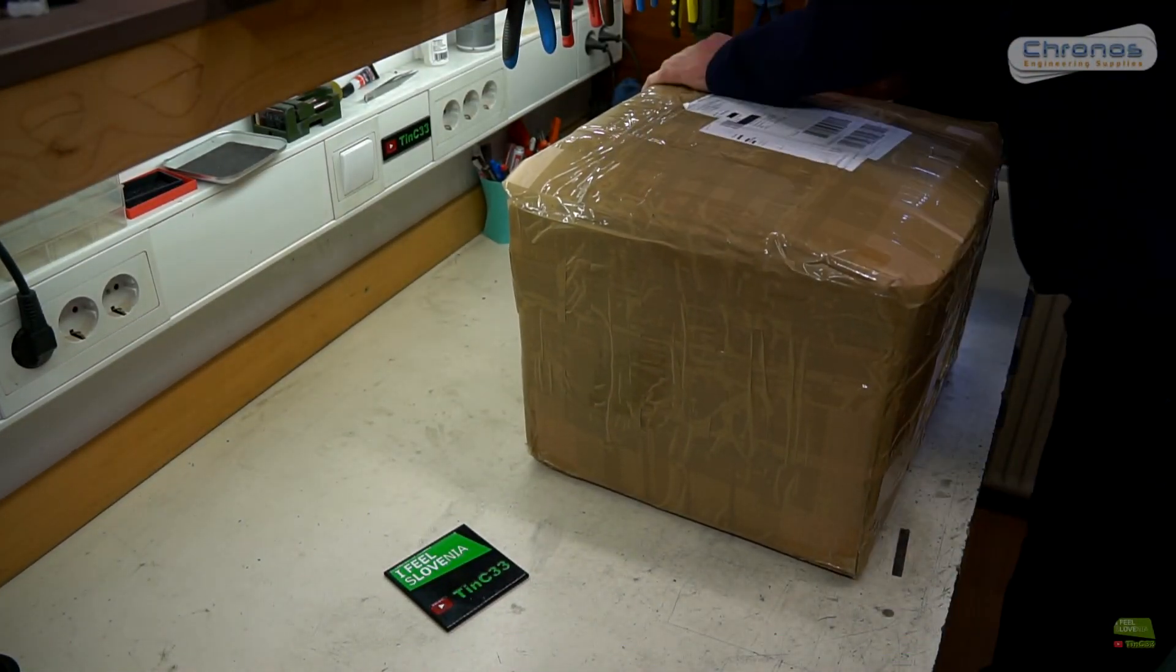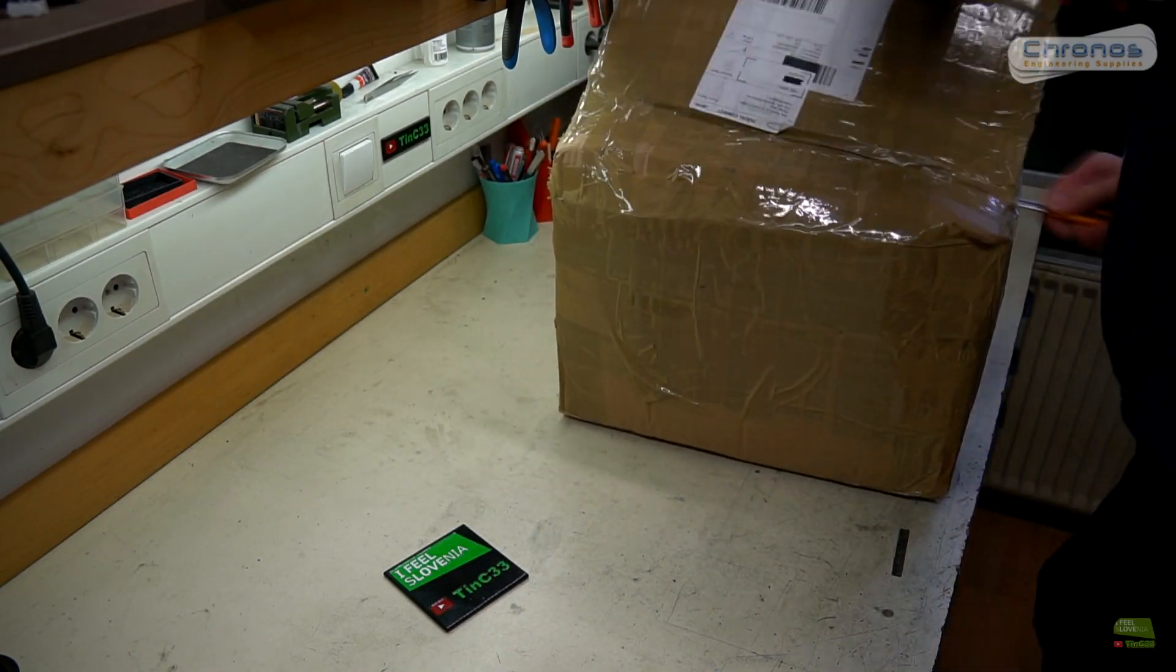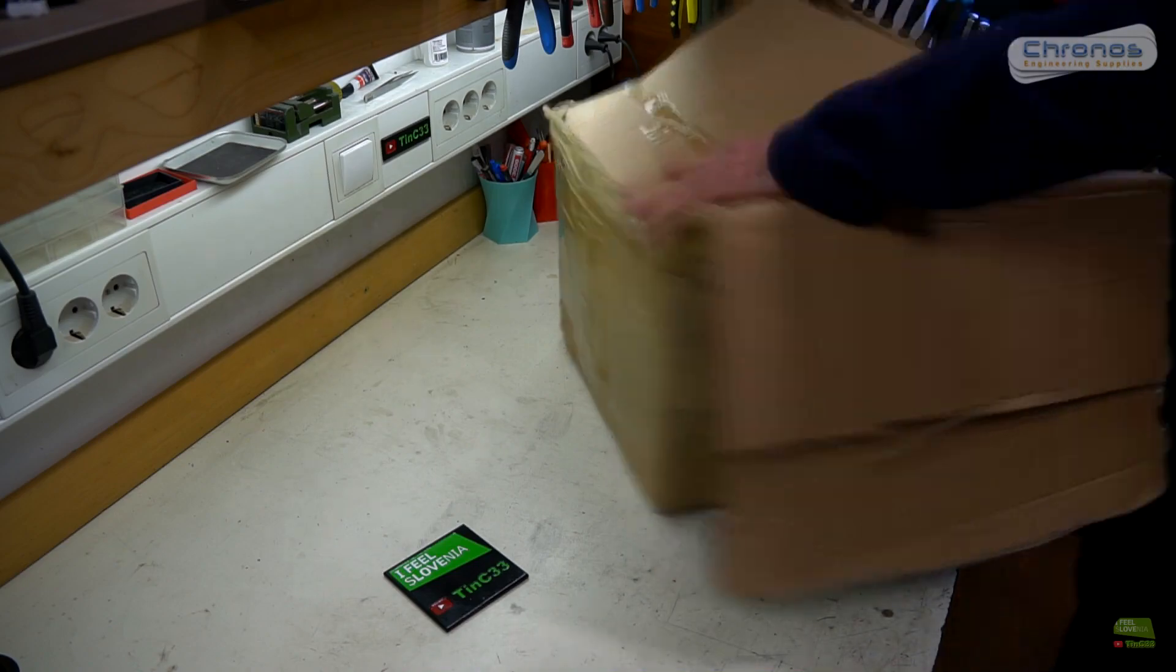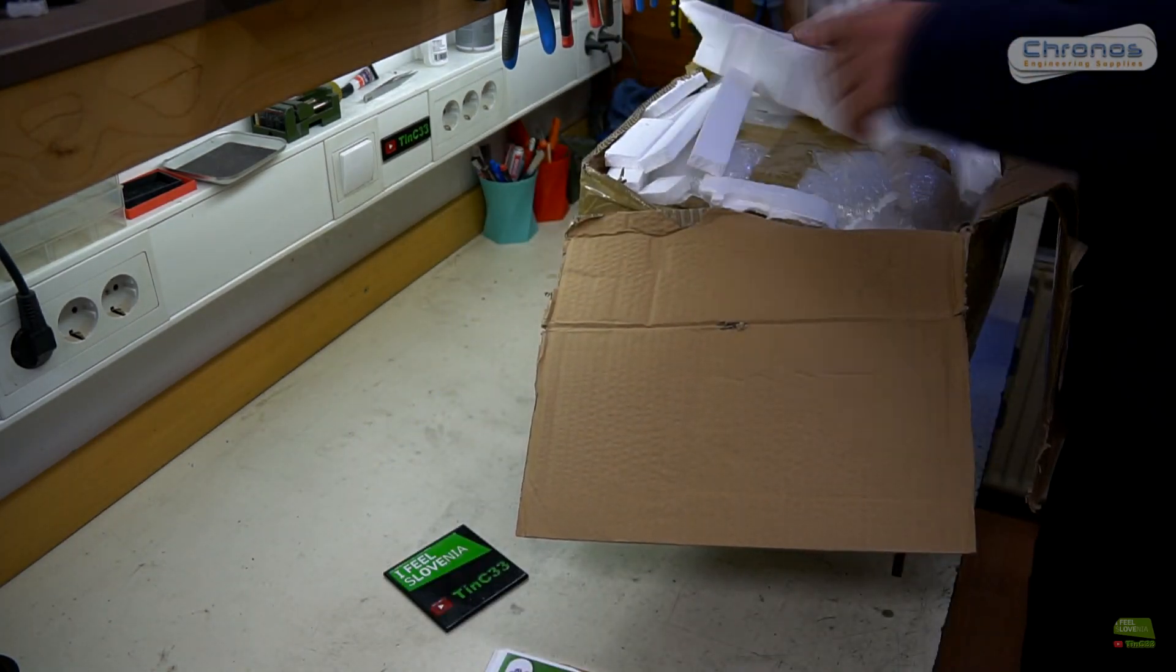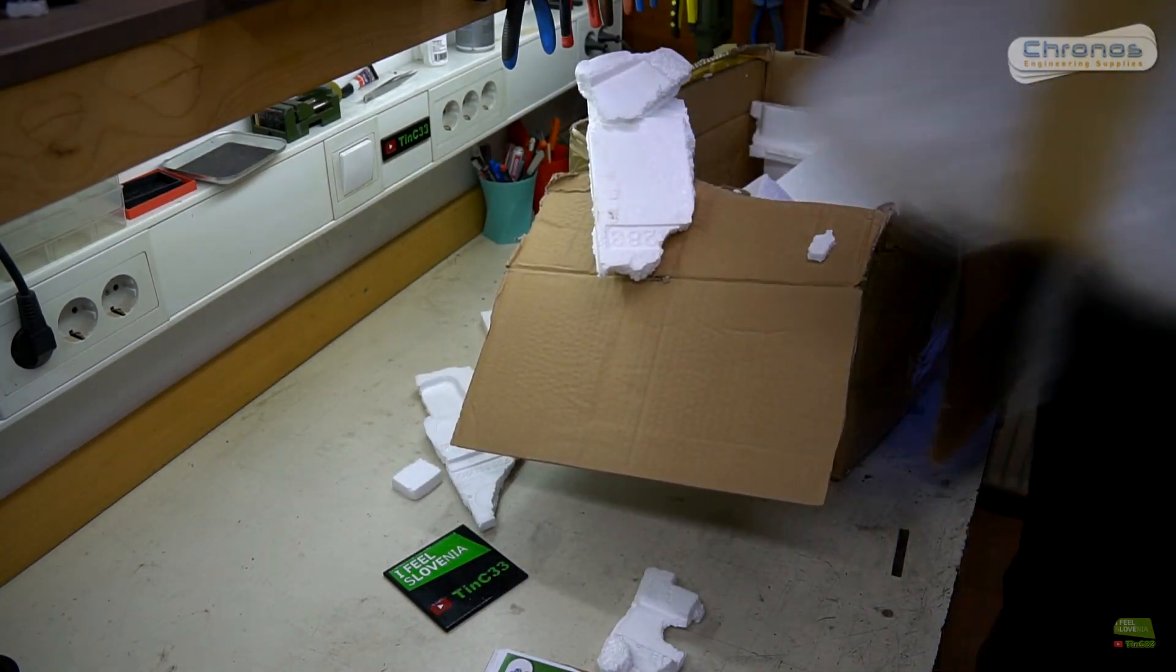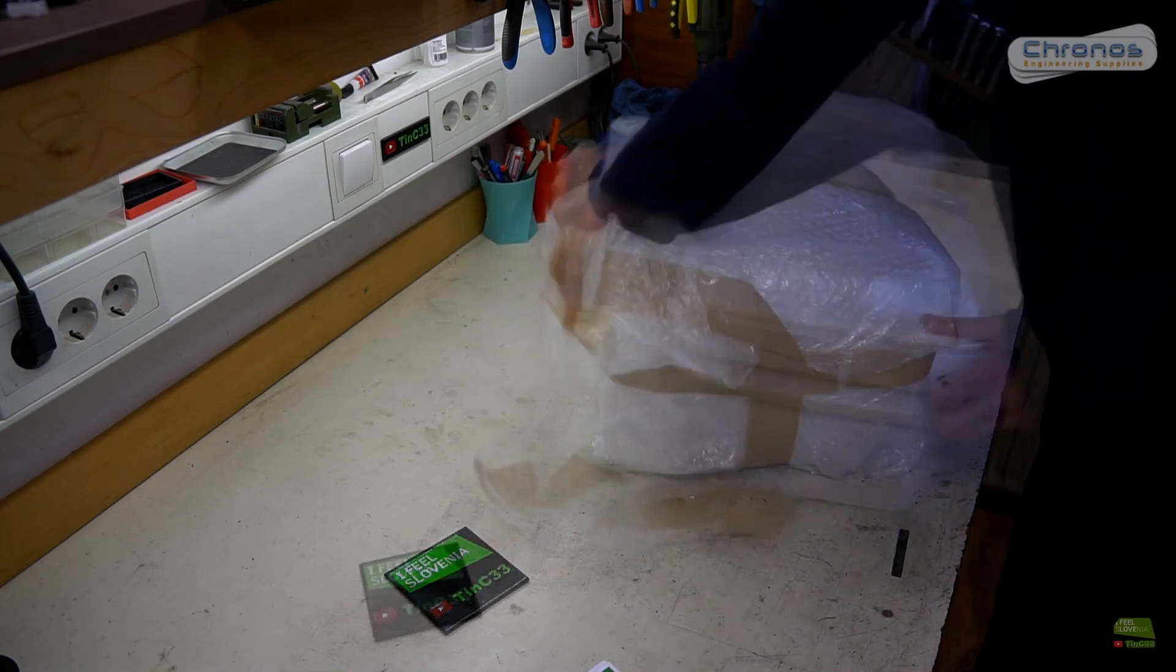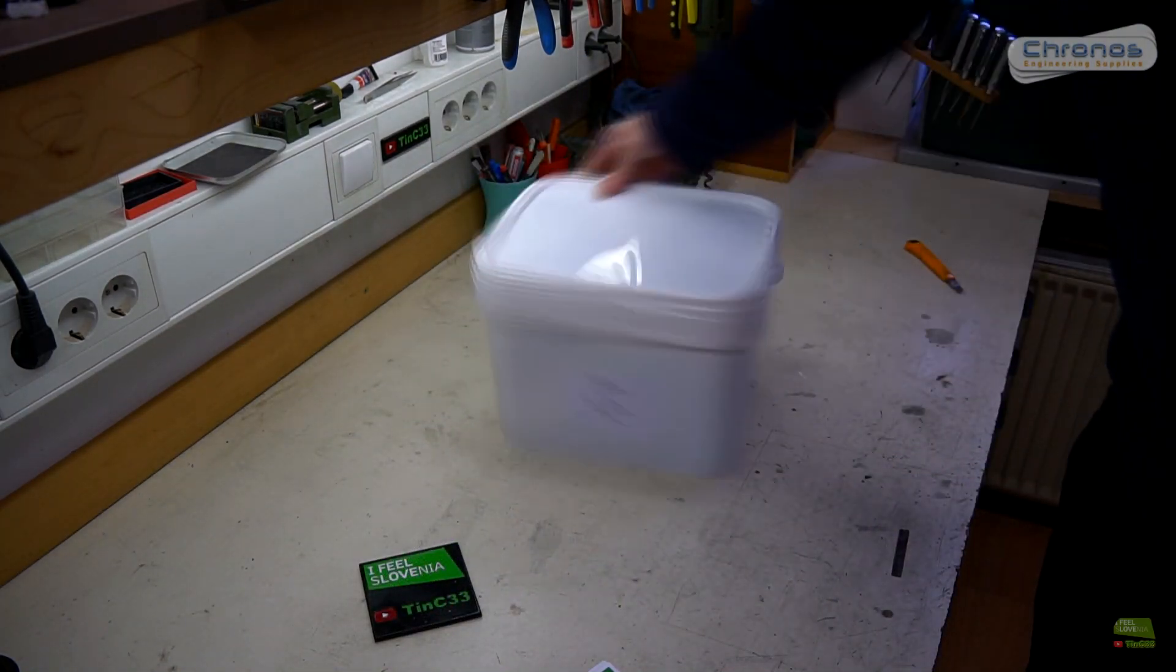Let's check what we got in the box. It's definitely one of the most protected packages I got so far. But it's logical, there's acid inside and nobody wants damage on the package. There's a lot of protection material in the box. The final box is wrapped once again with lots of bubbles. When we get rid of all the bubbles we get a plastic container, and in here should be everything we need to blacken steel.